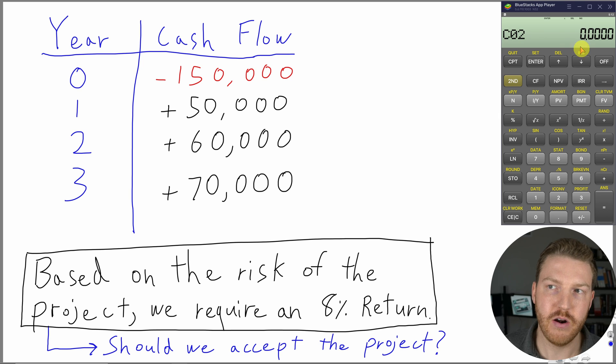Then let's hit the down arrow. Now we're on to cash flow two, which is going to be the $60,000. There we go. We'll hit enter, down arrow. Again, we're only getting that $60,000 a single time, so we'll leave that frequency of the second cash flow as one and hit down arrow.